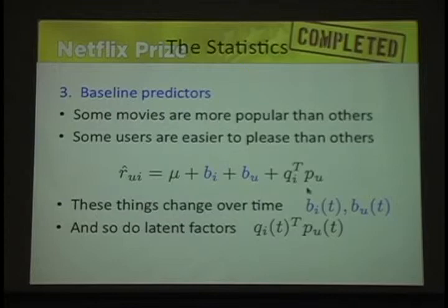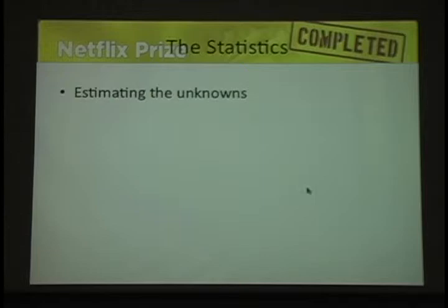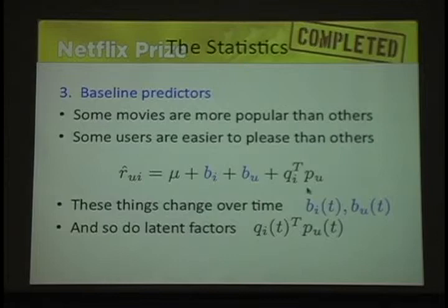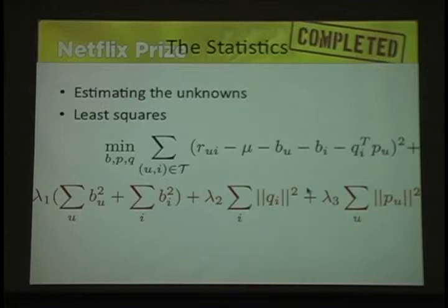All those things in the equation — the BIs, the BUs, the Q's, and P's — are to be estimated. For 18,000 movies and 50,000 users, that's a gazillion parameters. They did something simple: least squares, minimizing the squared distance between what you think the rating is and what it was. But to control the fitting with so many parameters, they put in a penalty term — regularization — where they don't let the parameters get too big. The sum of the squared B's for every user is controlled to not be very large. This is called regularization, or shrinkage — very standard statistical ideas developed from theoretical notions about 40 years ago, now essential for these kinds of predictions.